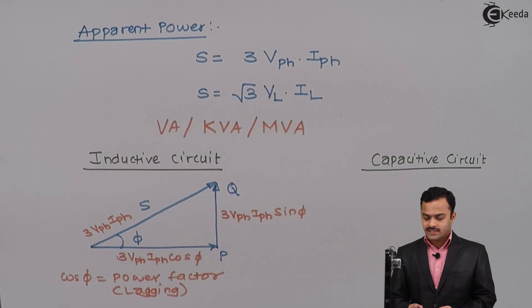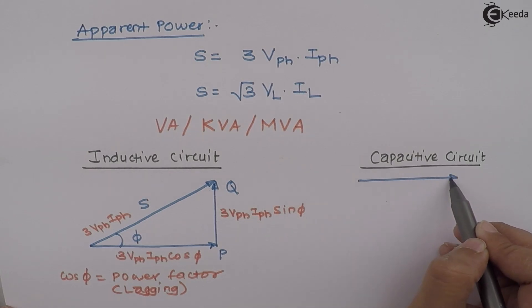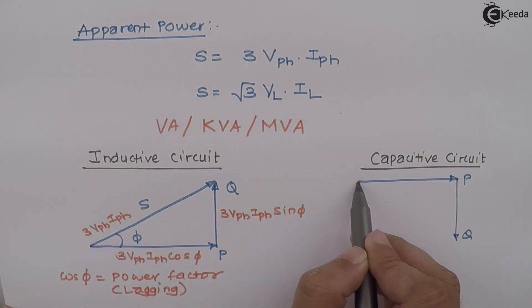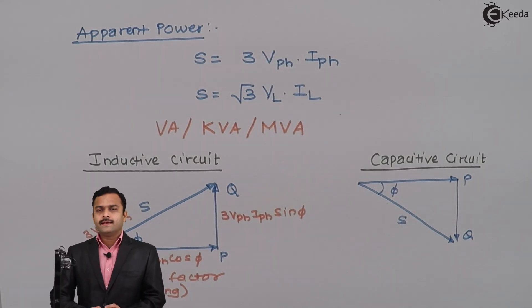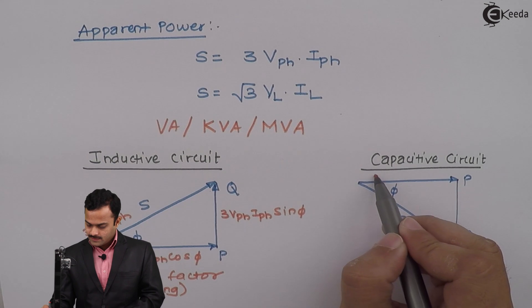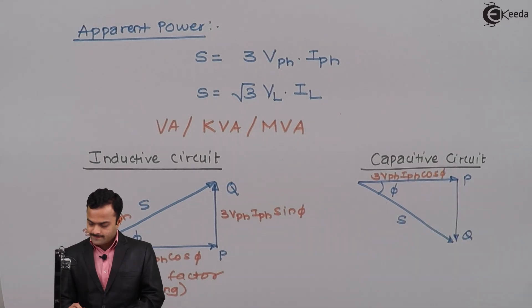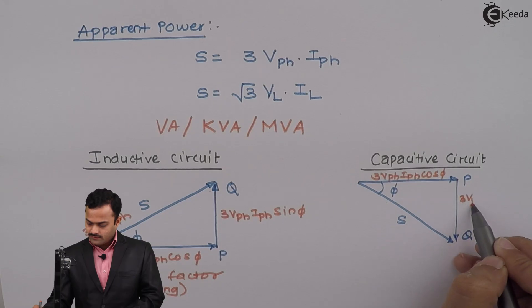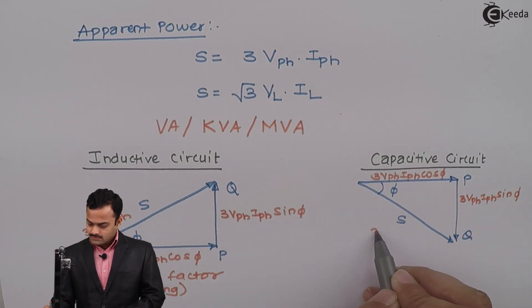For capacitive circuit, the power triangle will be like this. Once again, P is active power given by 3 VPH, IPH, cos φPH or cos φ. Q is 3 VPH, IPH, sin φ and S is 3 VPH, IPH.